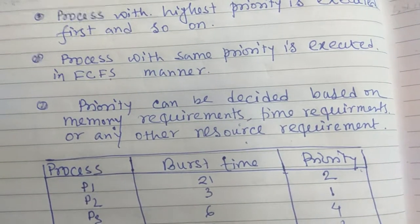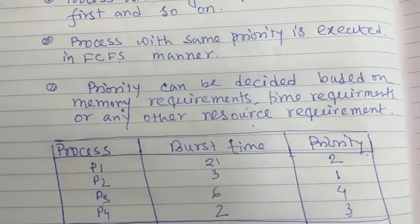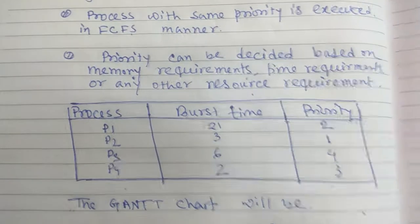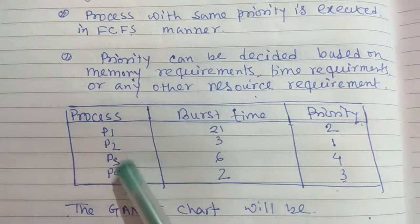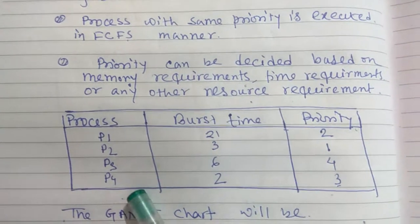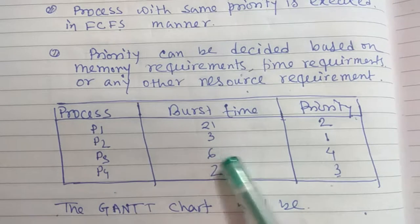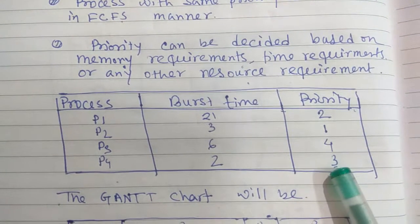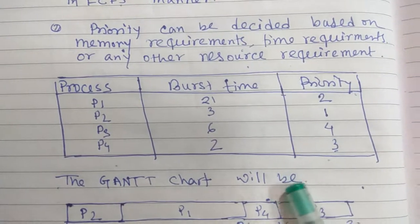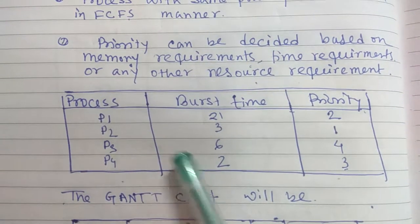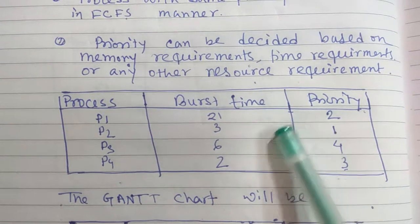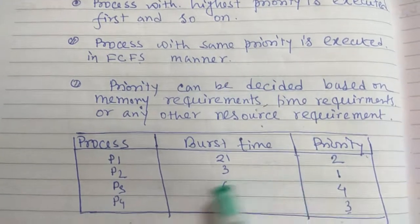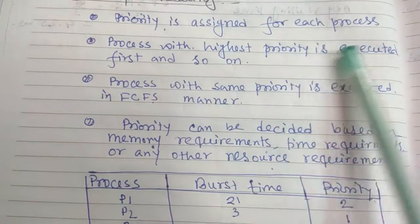Priority can be decided based on memory requirements, time requirements, or any other resource requirement. Let us take an example. Suppose there are four processes P1, P2, P3, P4 — burst time and priority are given for each. In priority scheduling, the process with the highest priority is executed first.